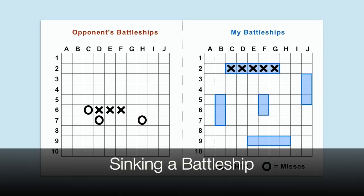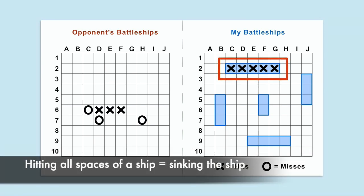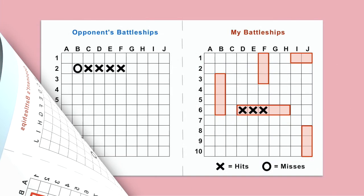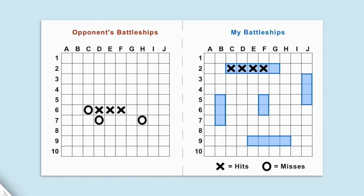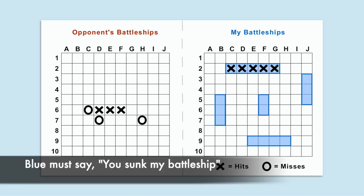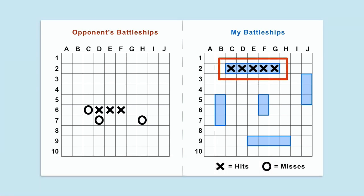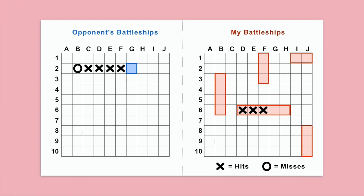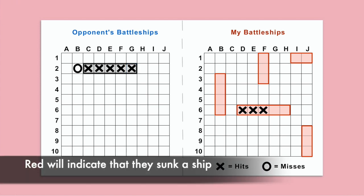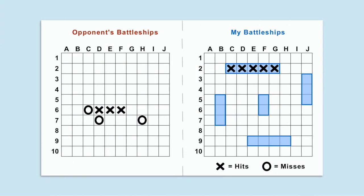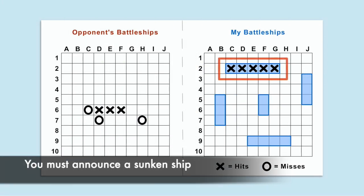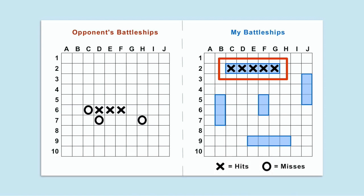Whenever a player hits all of the spaces on one of their opponent's battleships, they have sunk that ship. For example, if the red player called out G2 on their turn, the blue player would say hit, and also say you sunk my battleship, because the red player hit all of the squares of one of their ships. The red player should outline the squares so they know they sunk that ship. Whenever your opponent sinks your ship, you must tell them that this happened — a player cannot withhold this information.